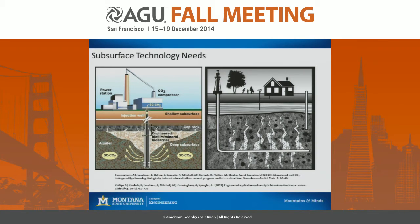Cements, though, still have a high viscosity and can require increased pressures to place into the subsurface. The use of microbes shows a promising application because these microbes are very small and can penetrate small aperture fractures, which may still be a significant leakage pathway for gas.